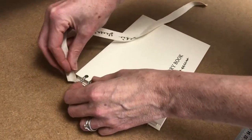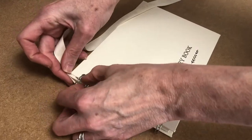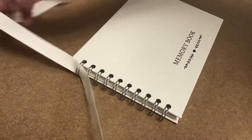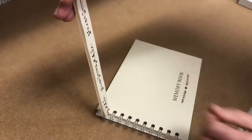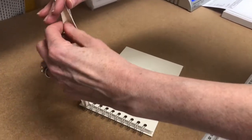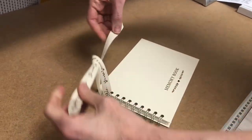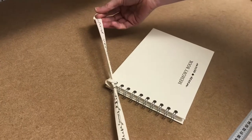Take the left hand end and thread it through the first spiral of the spiral binding. Then pull it up to make sure both lengths are the same. Tie a knot in the normal way and pull it tight.